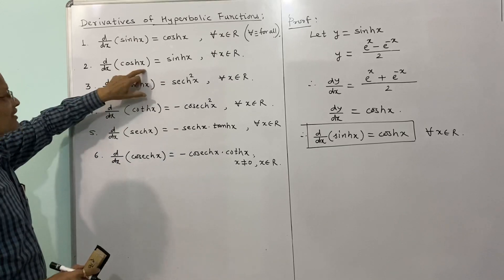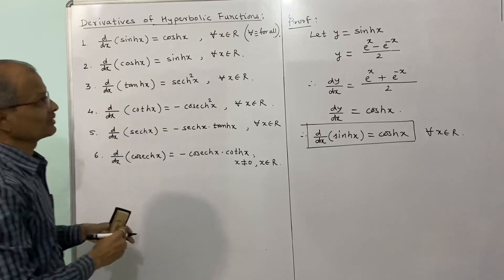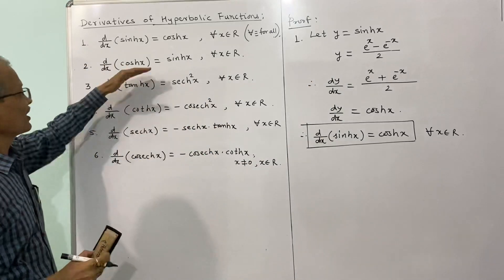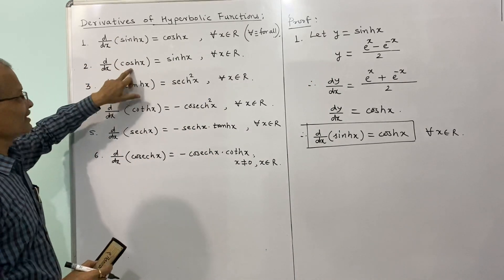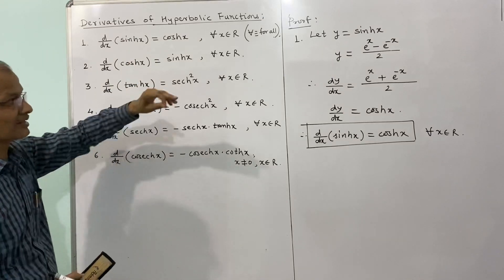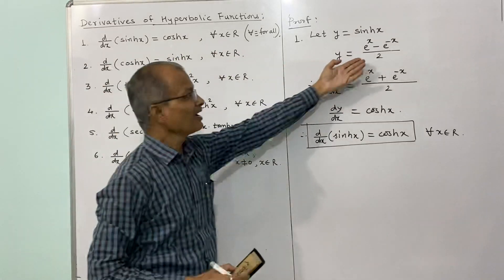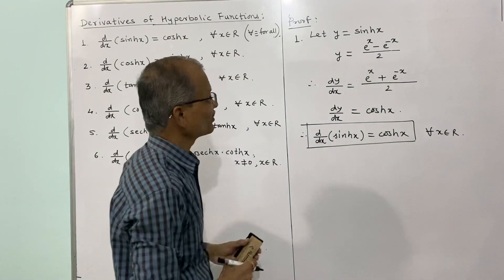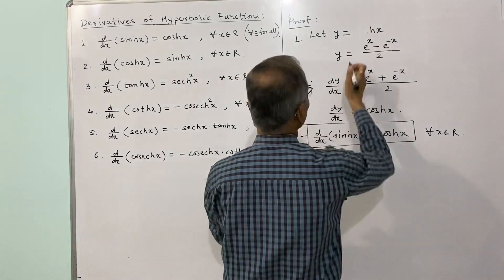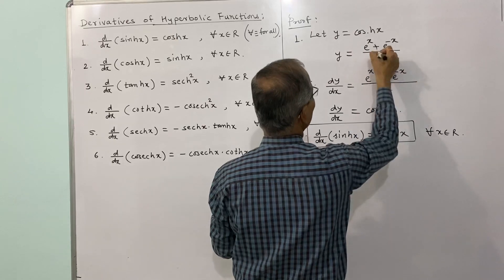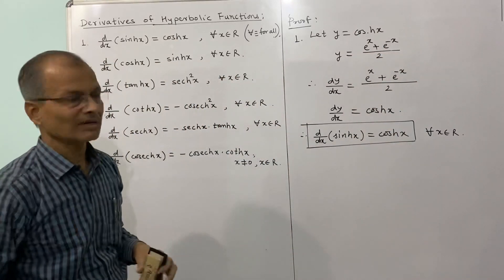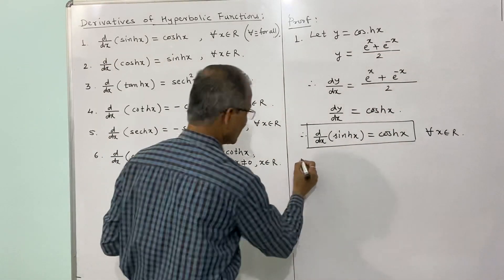For the second result, try it yourself. It follows in exactly the same way. Write y equal to hyperbolic cos x, write the definition of hyperbolic cos x — there is a plus sign instead of minus. Make the corresponding changes and you will obtain the second result.